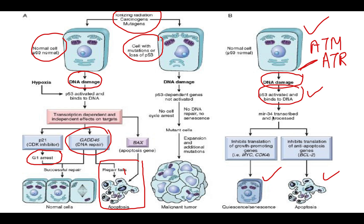In cases of mutation or loss of P53 gene, when DNA damage occurs, P53-dependent genes are not activated. There is no cell cycle arrest, no DNA repair, no senescence — and the cell goes on to expand with additional mutations accumulating.